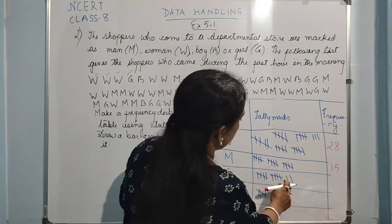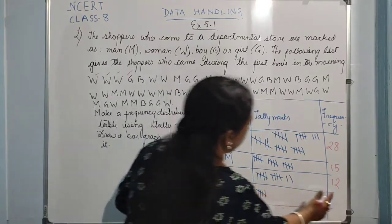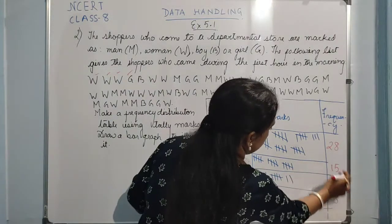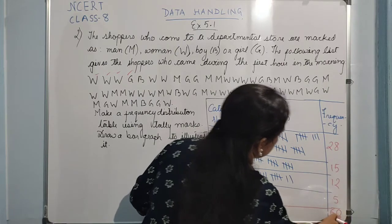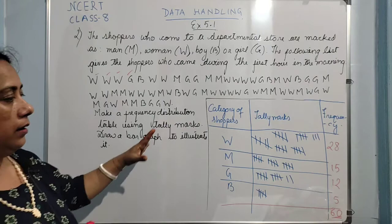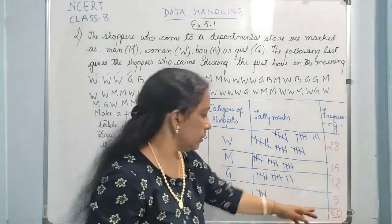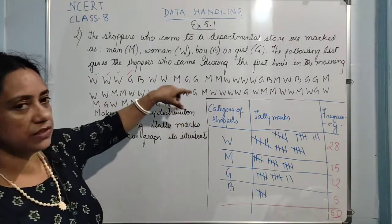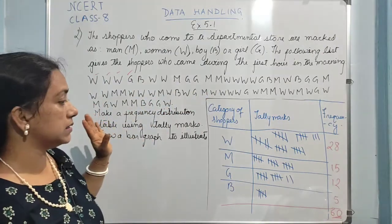For girls — five, ten, twelve — so girls is twelve. And boys — five — then eight, nine, ten, and the total: twenty, two, three, four, five, six — it means that the total of sixty people visited the departmental store in the first hour in the morning. You can just count the number here; you will find that the total people will be sixty only.